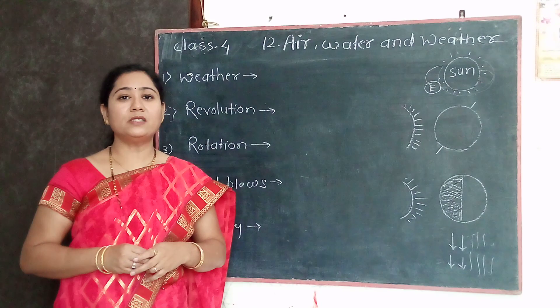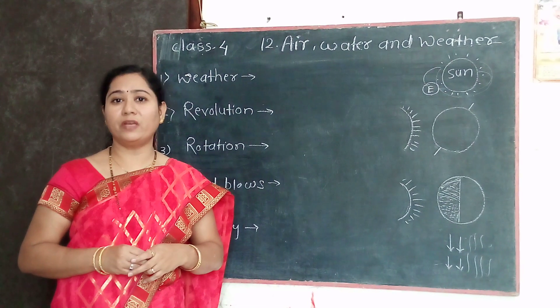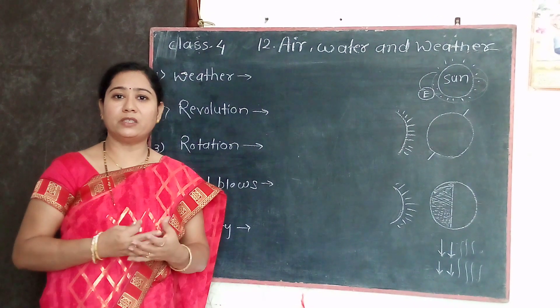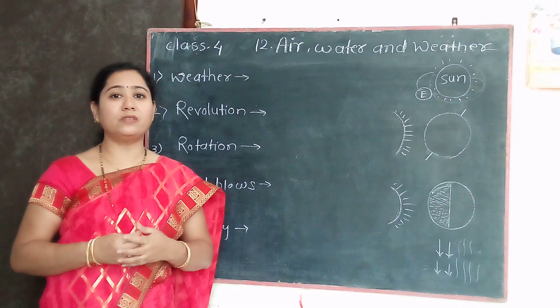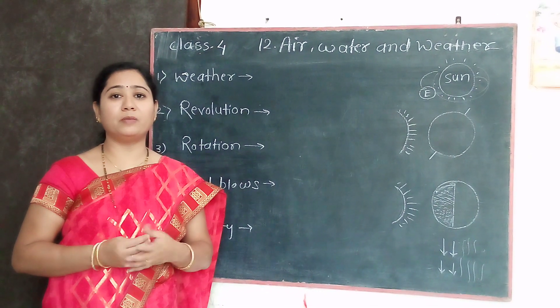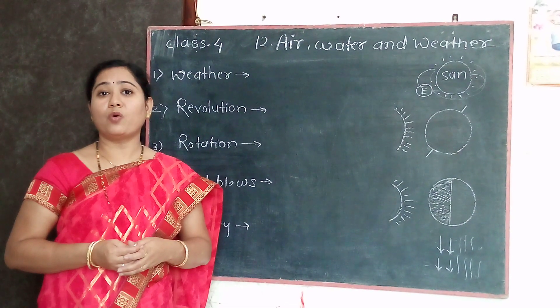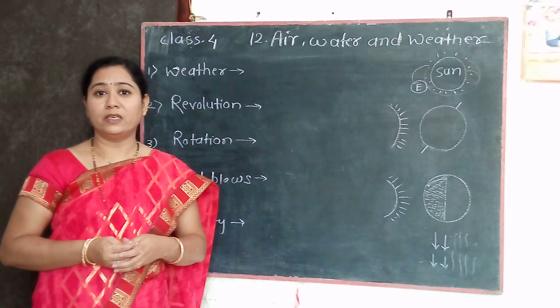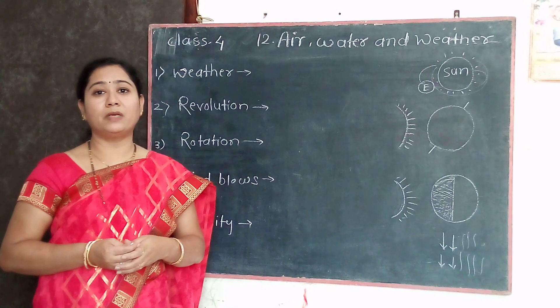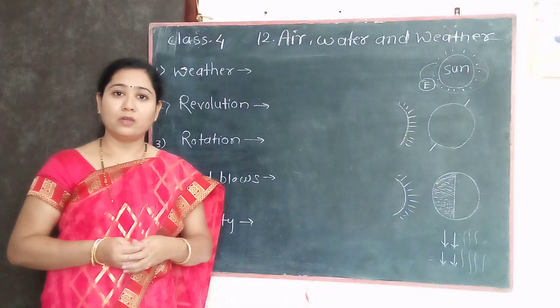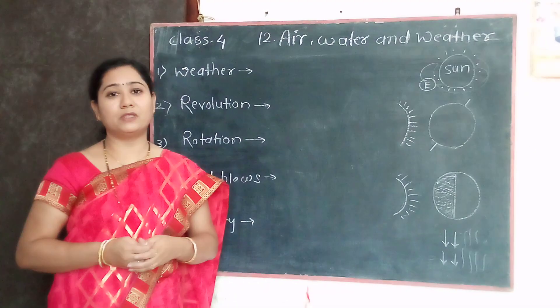Weather suddenly changes. Sometimes it is very hot, sometimes it is cold, sometimes there is cold rain, and sometimes only cold waves move. Why does this happen?